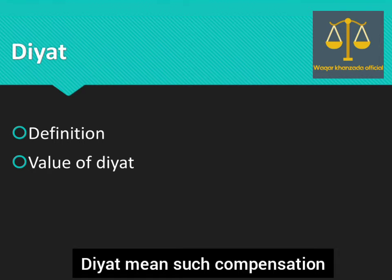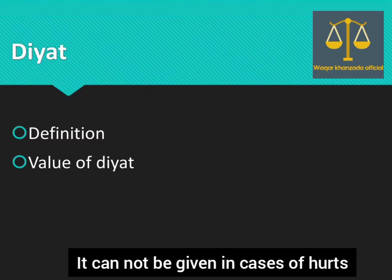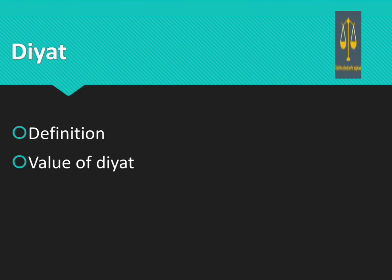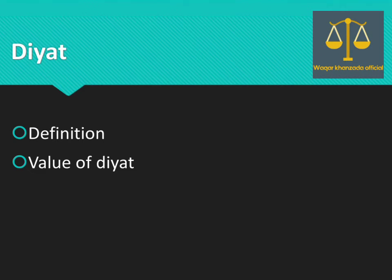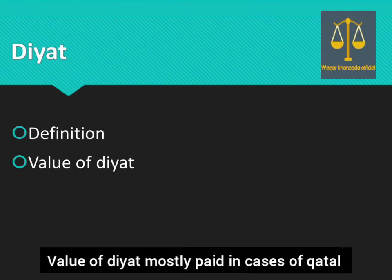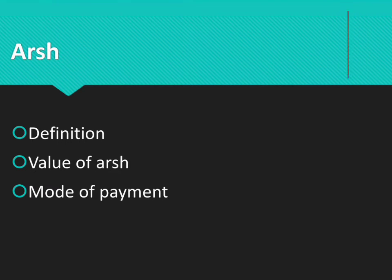Diyat means the compensation payable only in cases of Qatl (murder) and not in cases of hurt. Diyat سے مراد ایسی compensation ہے جو قتل کے cases میں legal heirs کو دی جائے گی؛ hurt کے cases میں نہیں دی جائے گی — اس کے لیے Arsh اور Daman کی punishment رکھی گئی ہے۔ The value of Diyat under Article 323 is 30,630 grams of silver.